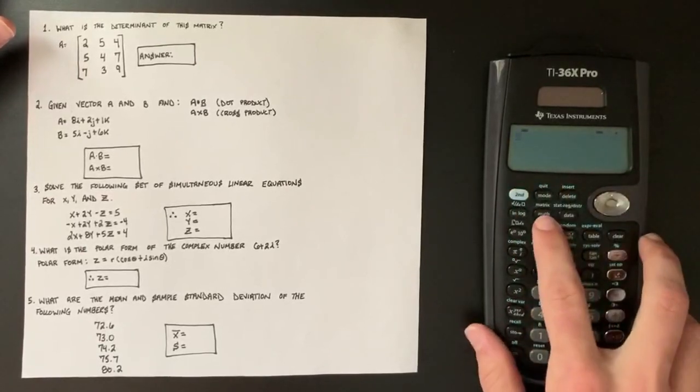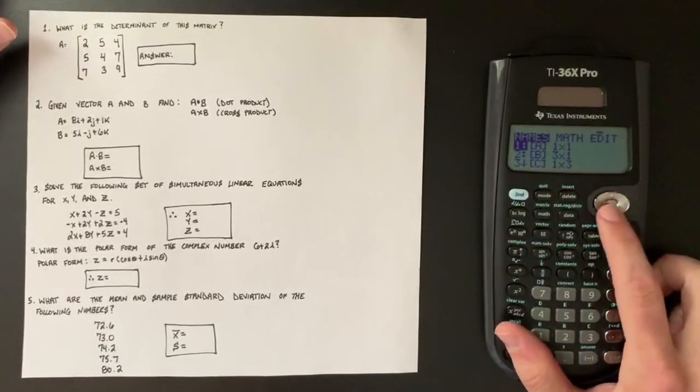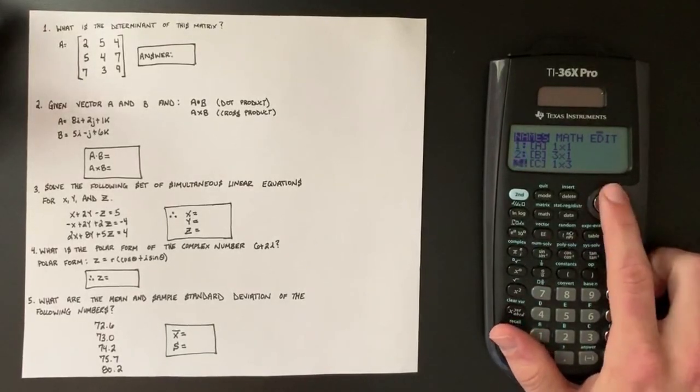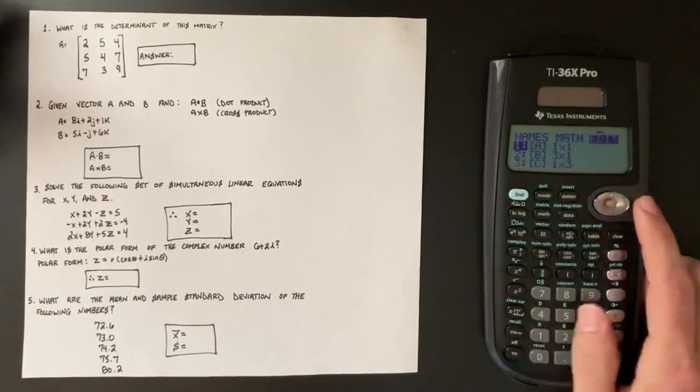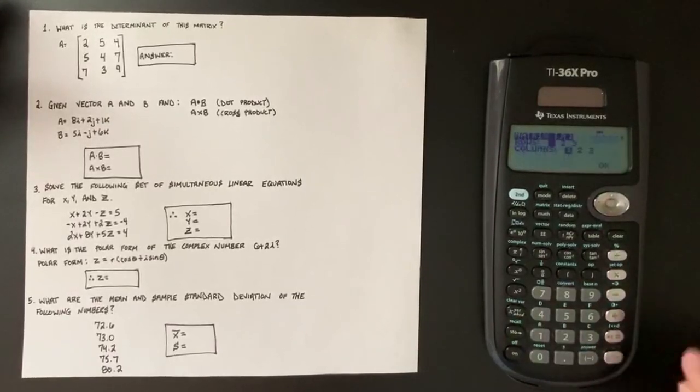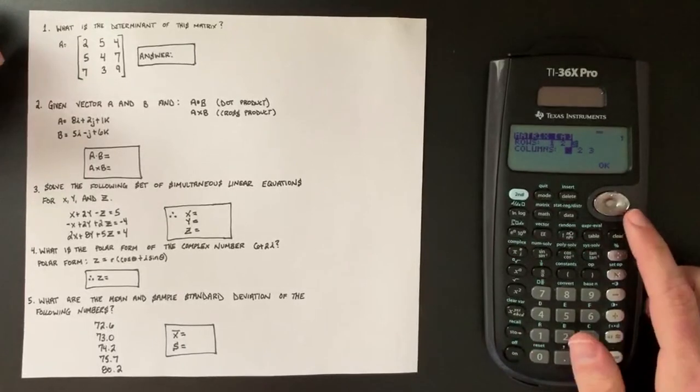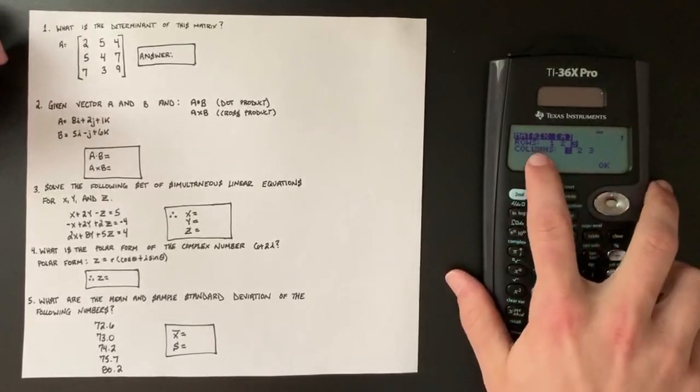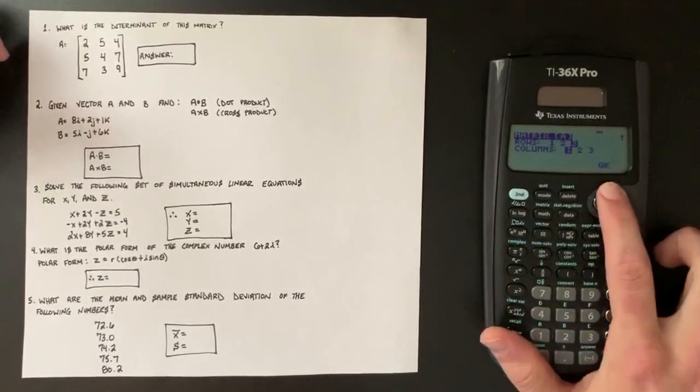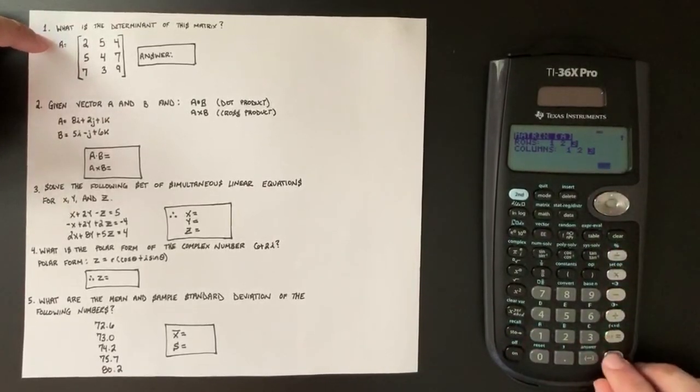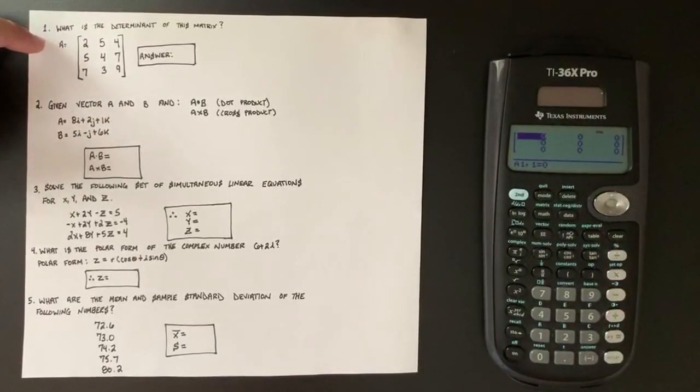All you do is second, matrix, and just like any other calculator you've used in the past, you'll have these different matrices setups and you're going to have to edit those in order to actually input the data that you need for your specific matrix. So you'll have rows and columns listed and this is a three by three matrix. So we'll do three and three and hit OK and this will bring up the matrix.